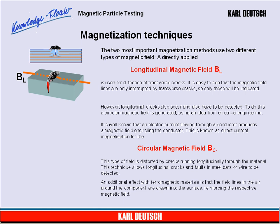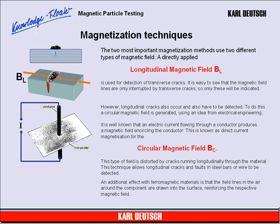To detect longitudinal cracks, a circular magnetic field is generated using an idea from electrical engineering. It is well known that an electric current flowing through a conductor produces a magnetic field circling the conductor. This is known as direct current magnetization for the circular magnetic field. This type of field is distorted by cracks running longitudinally through the material, allowing longitudinal cracks and faults in steel bars or wire to be detected. An additional effect with ferromagnetic materials is that the field lines in the air around the component are drawn into the surface, reinforcing the respective magnetic field.